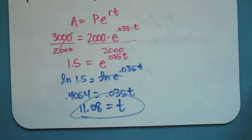So it's going to take me a little over 11 and a half years, maybe about 11 years, six months to get my $3,000.